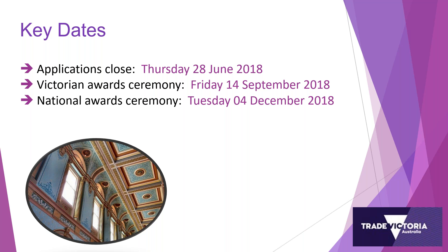The Victorian awards ceremony happens on Friday the 14th of September. All applicants are invited to the awards ceremony — it's a fabulous night. Not only do you potentially win an award but you also get to visit Government House, meet the Governor, and it's a great networking opportunity. It's an evening that starts relatively early and is over by 8:30. The national awards ceremony is on Tuesday the 4th of December. If you're a winner in one of the 13 national categories, you will be invited to network with other exporters from across the country. Make note of those dates.